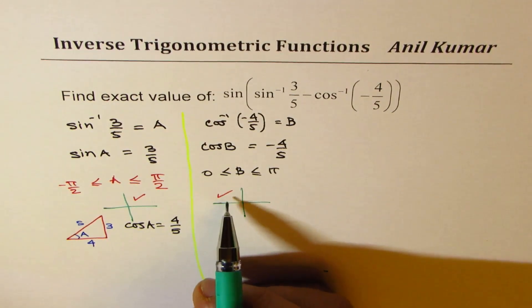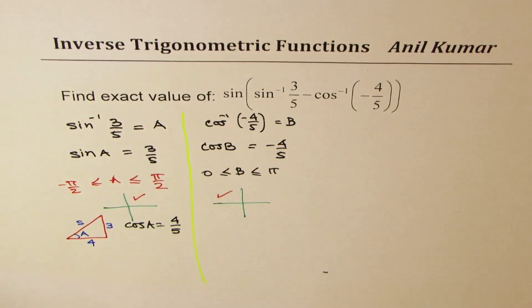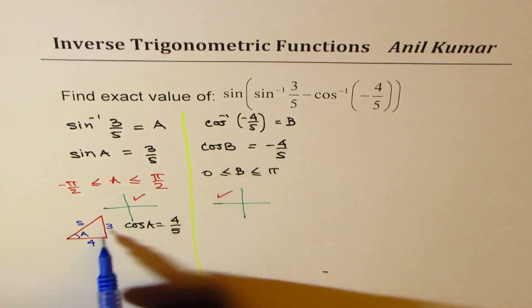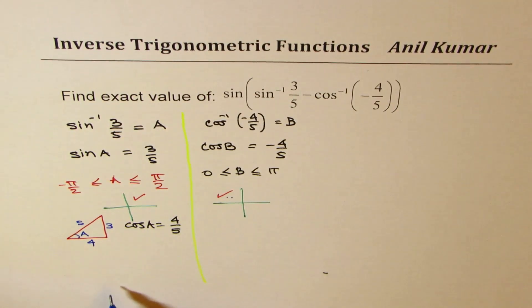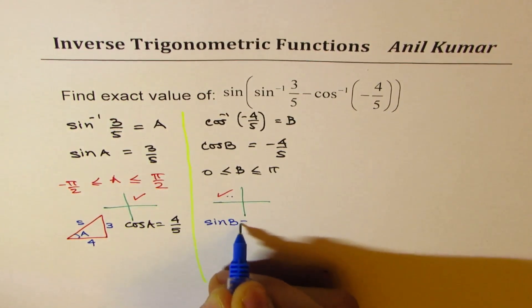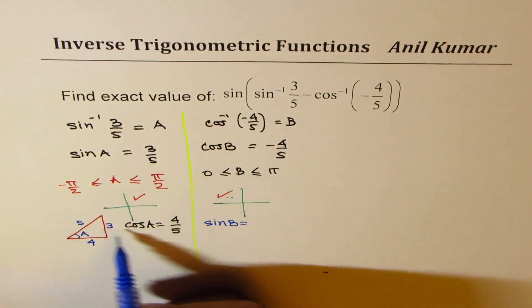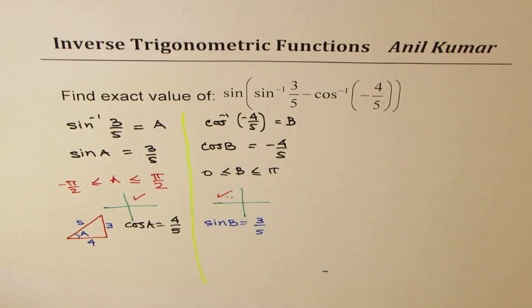However, in quadrant 2, sine is going to be positive. So, in this particular triangle, minus 4, 5, we can use the same triangle. The only thing is this lies now in this quadrant, which is quadrant 2. So, the value of sine B should be equal to 3 over 5, and it is going to be positive.